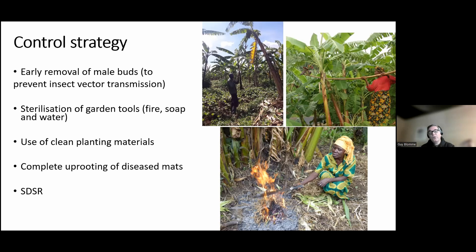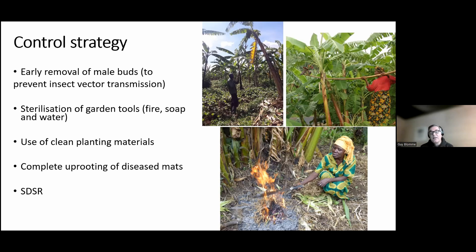For sterilization of garden tools, initially we advocated for the use of fire — put your machetes in fire until the metal blade is too hot to touch. This works quite well, but farmers often kept a knife in fire for minutes and minutes, and keeping it too long has a negative effect on the metal, making the knife less strong and less effective. More recent research has shown that if you clean your garden tool, your machete, with soap and water and then rinse it, it is as effective as fire or household bleach.